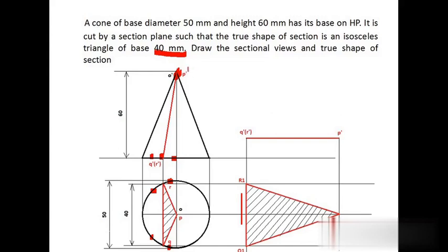We get points p, q, r in the top view. Simply connect p, q, r and hatch it — this is the sectional top view. To get the true shape of the section, the section plane p dash, q dash, r dash should be made parallel to the XY line. Draw vertical projectors from p dash, q dash, r dash and horizontal projectors from p, q, r. The intersections give points P1, Q1, R1. Join P1, Q1, R1 to get the true shape, which is an isosceles triangle of base 40 mm.